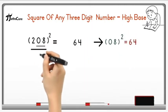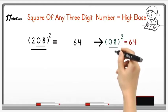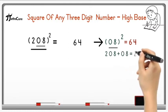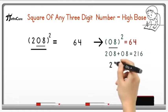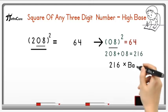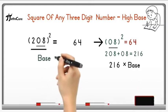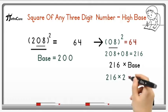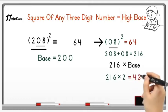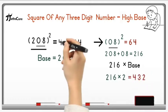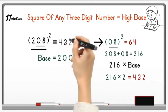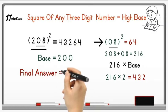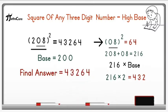After that, take whole number 208 here and add 08 in it. So 208 plus 08 is equal to 216. Now multiply this 216 with base number, which is 200, but instead of 200 we will just write 2. So 216 multiply by 2 is equal to 432. Now write down this number before 64, and this is your final answer: 43,264, which is square of 208.